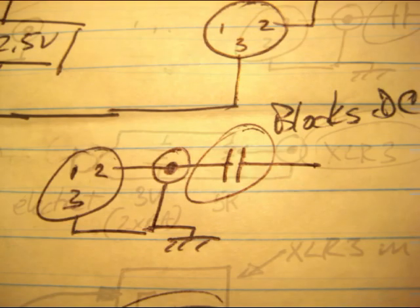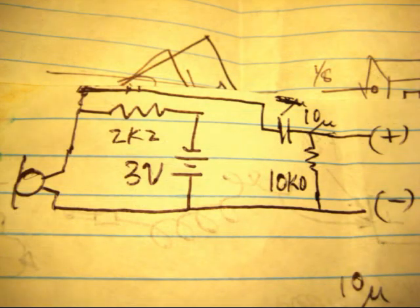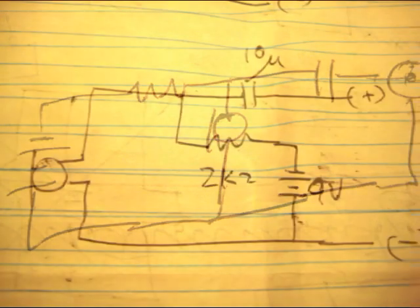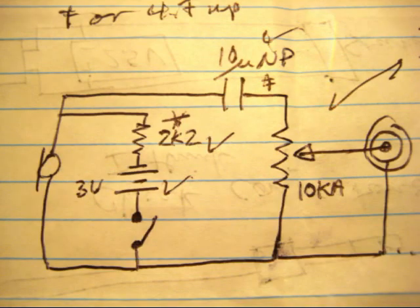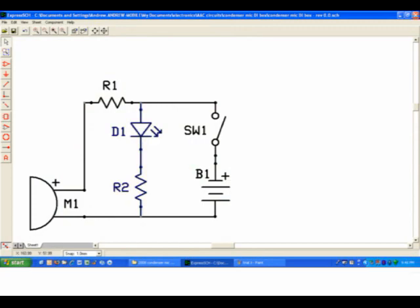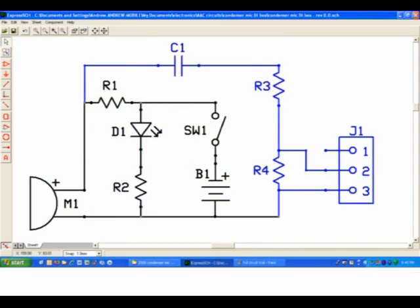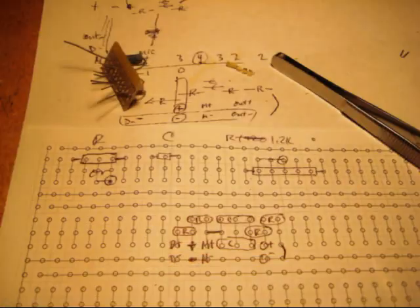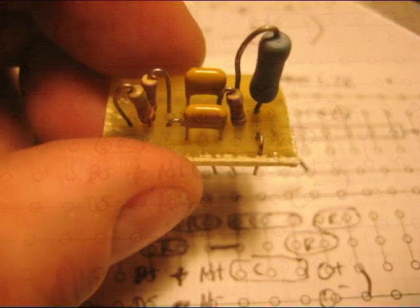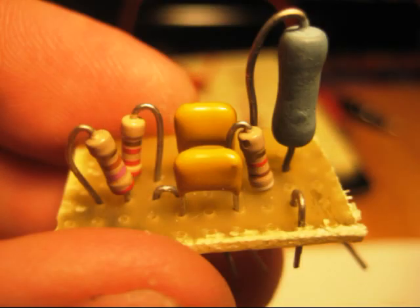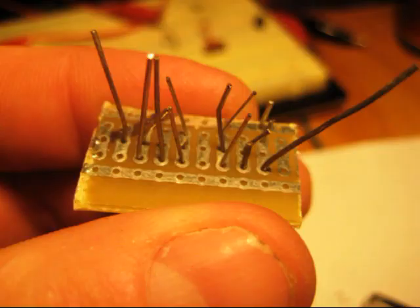And of course a color-coordinated project box is an important touch. With the power box and output decoupler built, this works fine with all of the commercial condenser mics I tried.